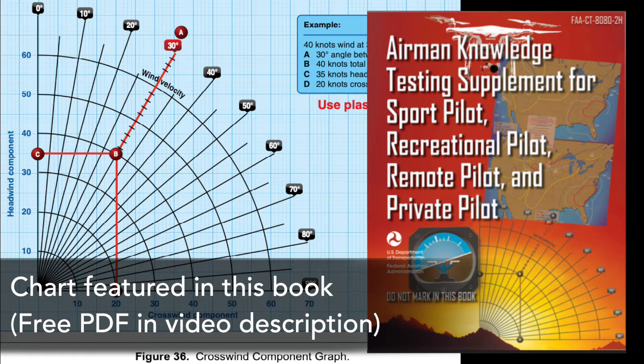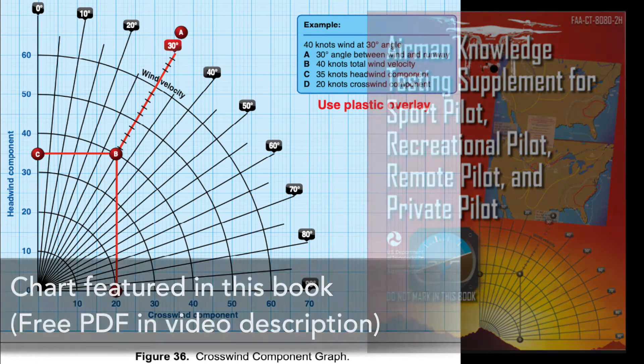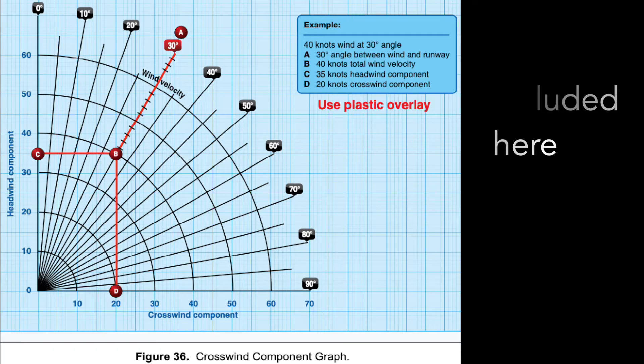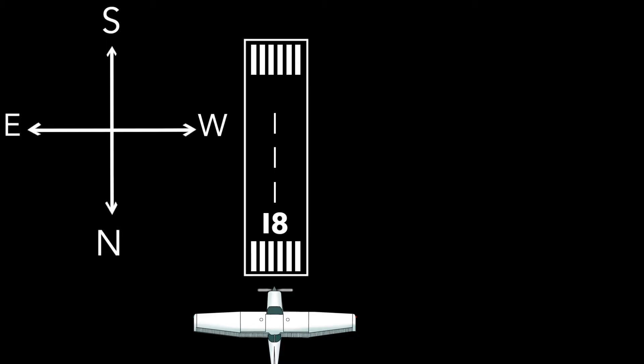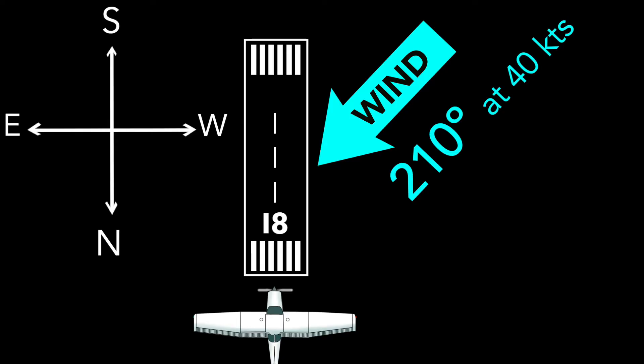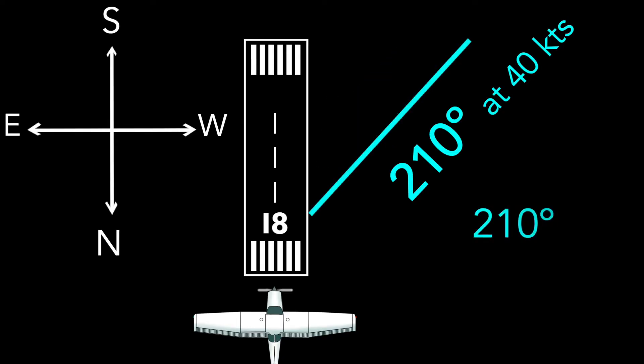The good news is that it comes with instructions. We can follow the given example illustrated on the figure itself. Let's say we're using runway 18 and the wind was reported as 210 at 40 knots. The difference between 210 wind direction and runway direction would be 30 degrees.